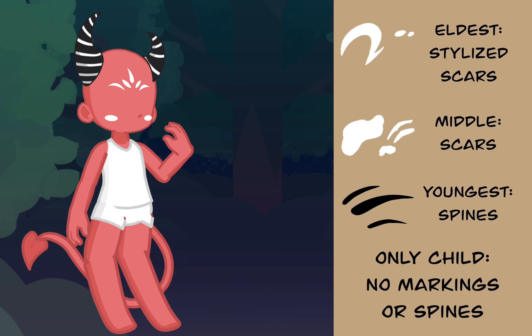The eldest child, you have stylized scars. If you're a middle child, you just have normal scars. If you're the youngest, you have spines. And if you're an only child, you have no markings or spines.